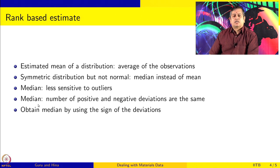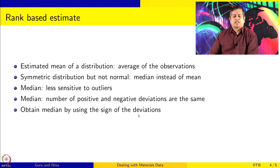The median also has the property that about the median, if you go on either side, the number of positive and negative deviations are the same. So you can obtain the median by using the sign of the deviations.